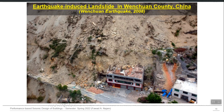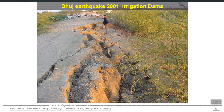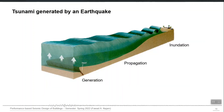Earthquake-induced landslides — this is from the Wenchuan earthquake in China. Slopes which are not stable are just waiting for a trigger, and an earthquake can provide that trigger. In the Bhuj earthquake in India in 2001, several structures and irrigation dams were destroyed.